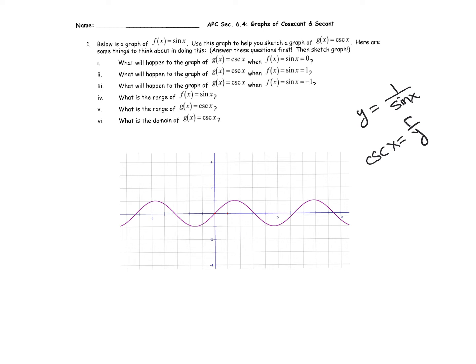Thinking back to our rational functions unit, that means at y equals zero there's going to be a vertical asymptote. Wherever sine is zero, the cosecant graph is going to have a vertical asymptote. So I'm going to put vertical asymptotes there.